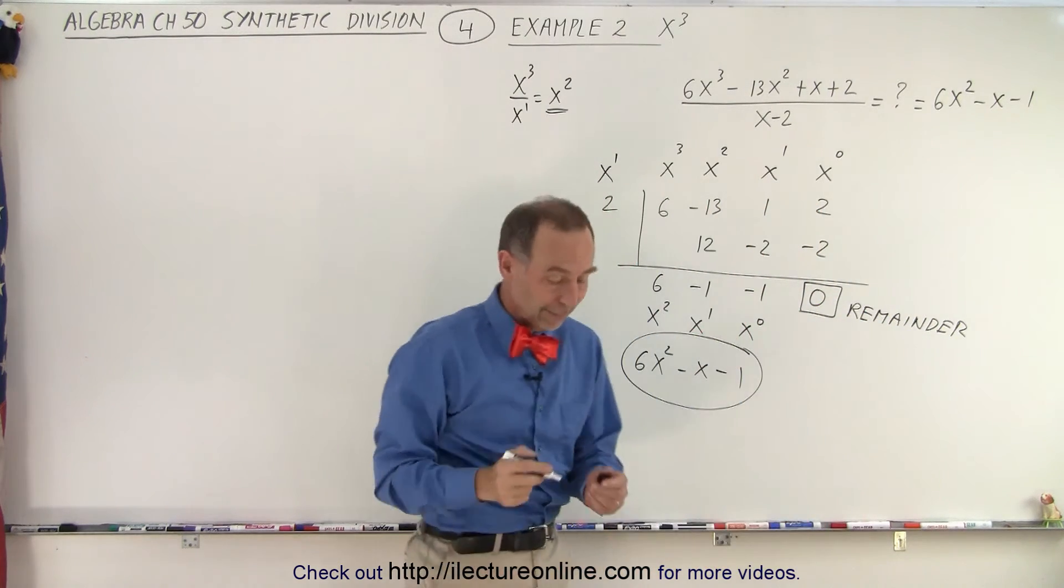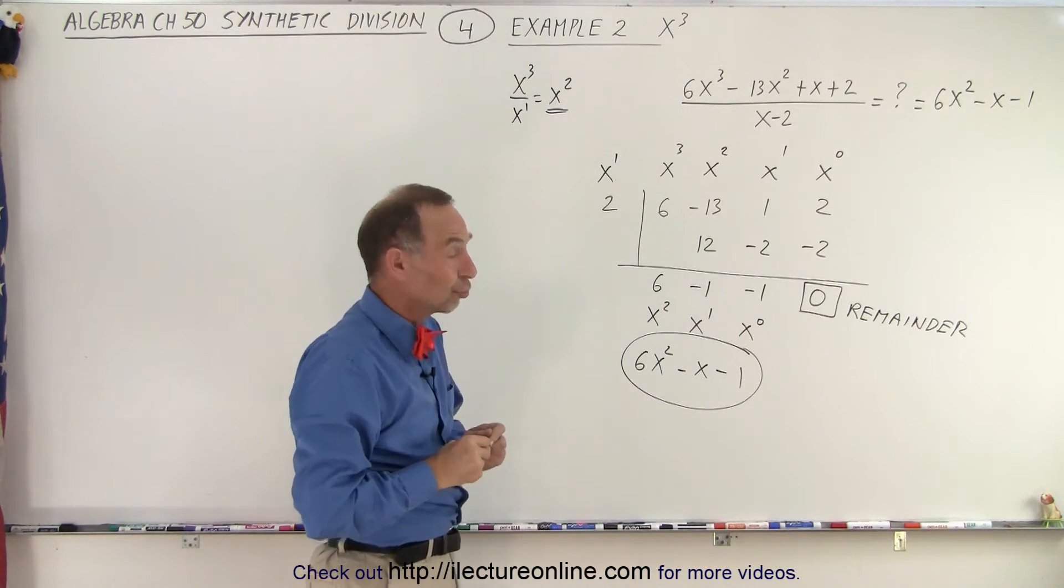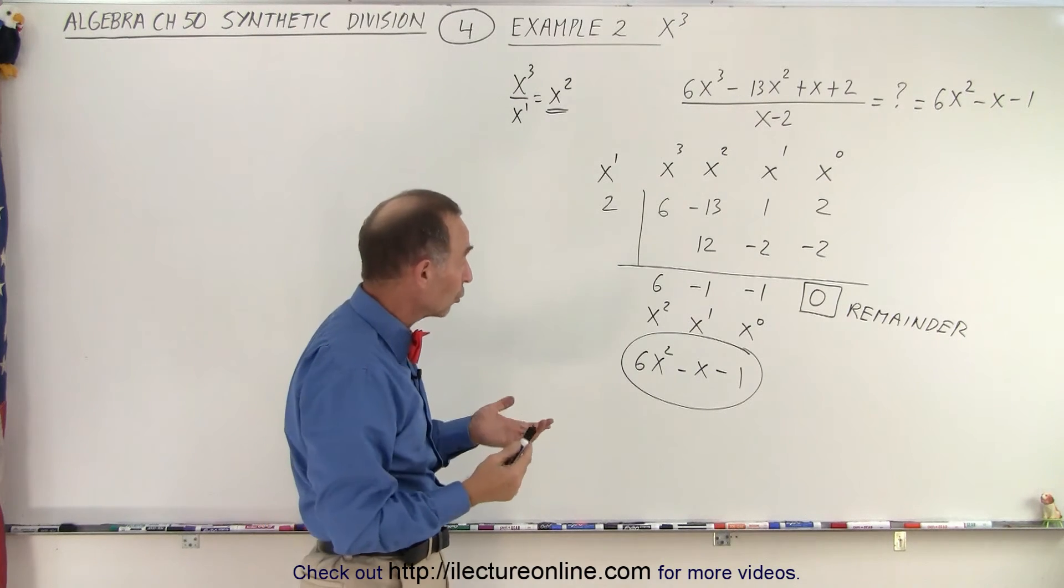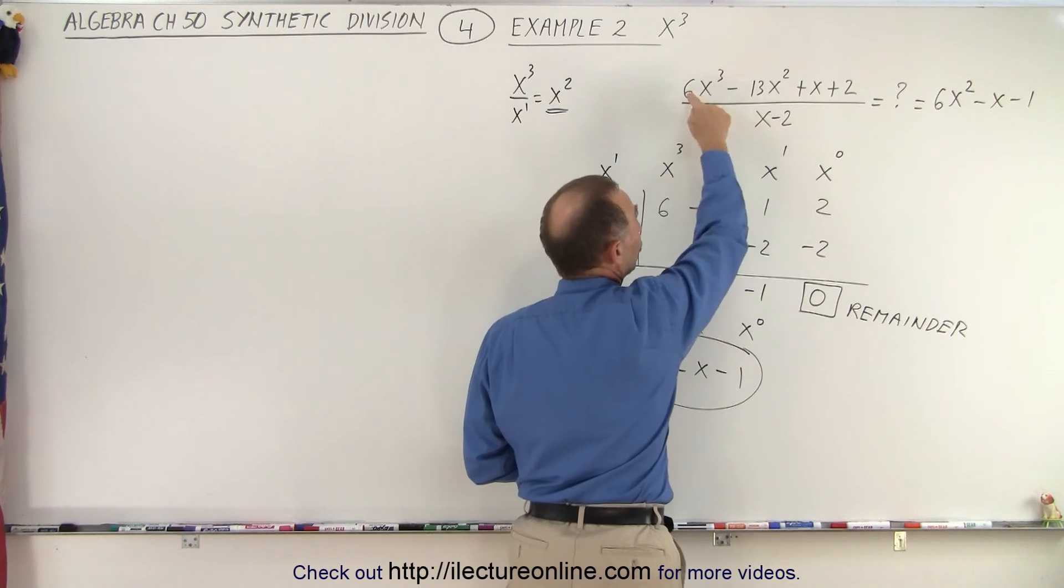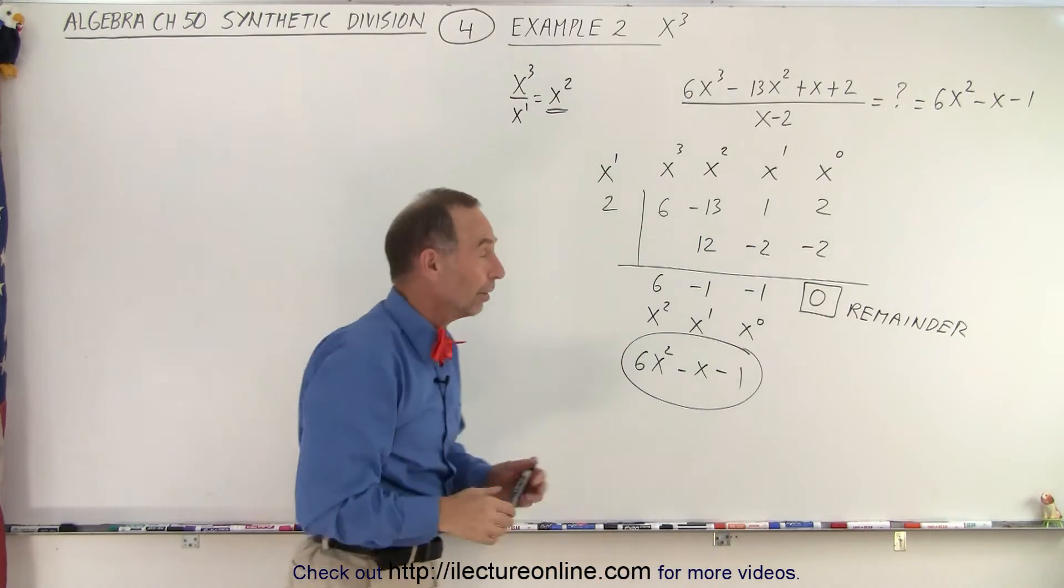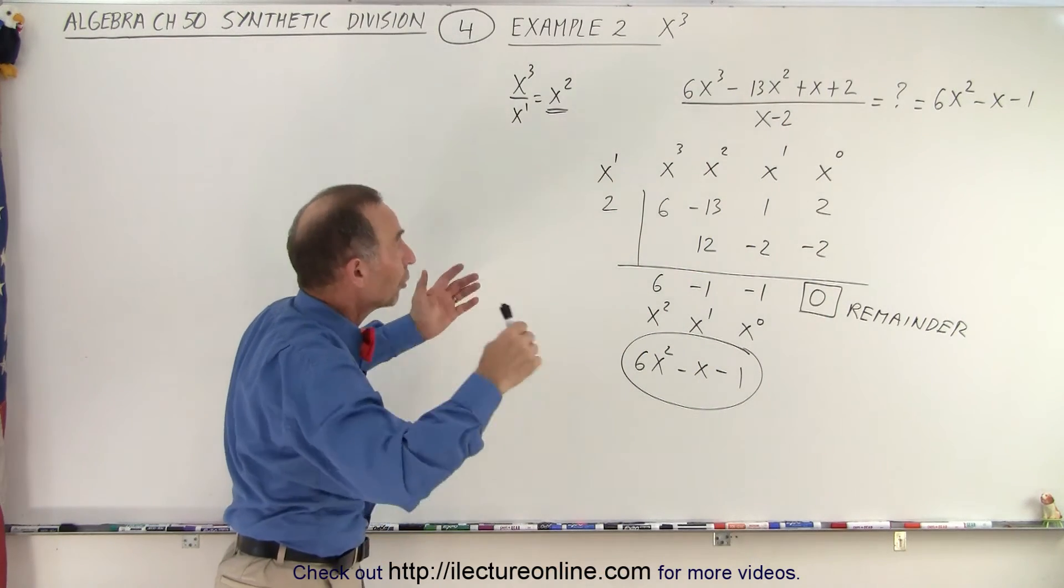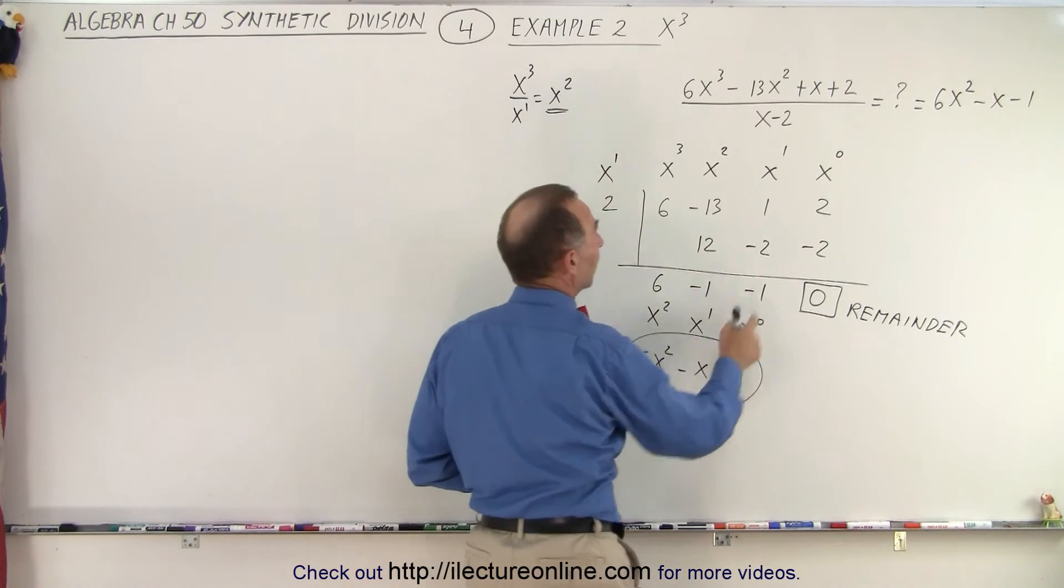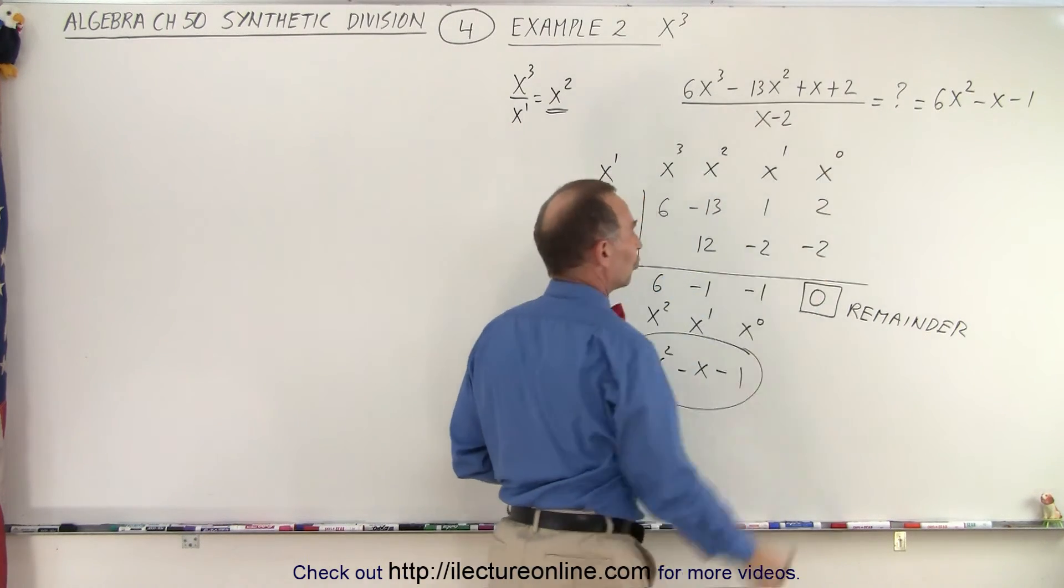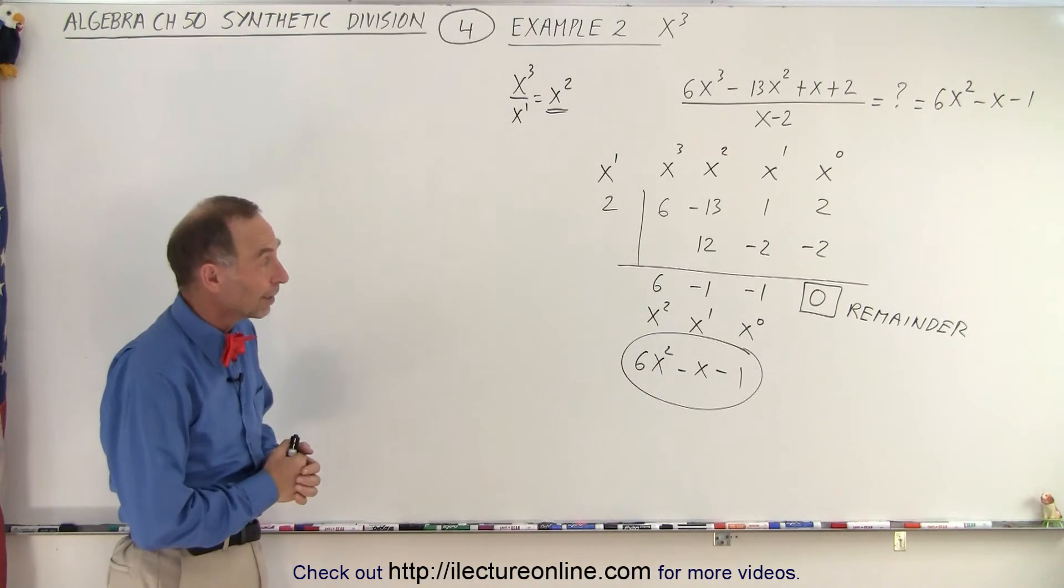Now let's say that this was a test and you wanted to make sure you did it correctly. Well one thing you could do is you could take this and multiply it times this and you should get back the original polynomial. That's what I was looking for. So again you take your answer and you multiply it times the denominator and you should get your numerator back. And that's one way to check to see if you did it correctly.